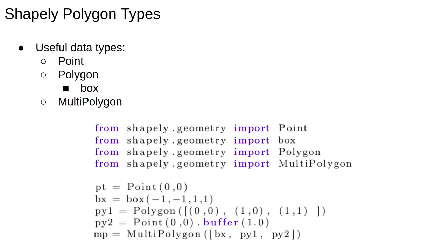We can create Shapely objects in a straightforward way from Python lists. In the code example shown, pt is a Shapely point, bx is a rectangle. A box or rectangle is defined with the syntax lower left x-coordinate, lower left y-coordinate, upper right x-coordinate, and upper right y-coordinate. pY1 and pY2 are both Shapely polygons.